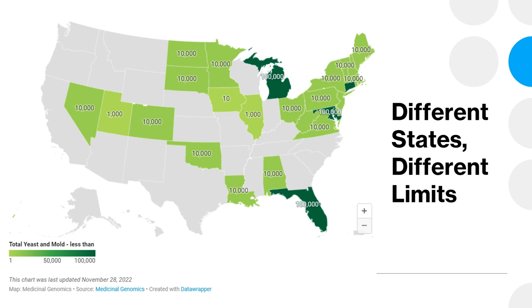While this seems high, especially when you look at this chart showing different regulatory limits for total yeast and mold across various states — where you see things like a thousand or ten thousand — it is something that growers and producers in Florida really struggle with, especially during the summer months. That's ultimately due to the amount of rain and humidity we have in Florida. We live in a swamp, and honestly, there is yeast and mold everywhere.